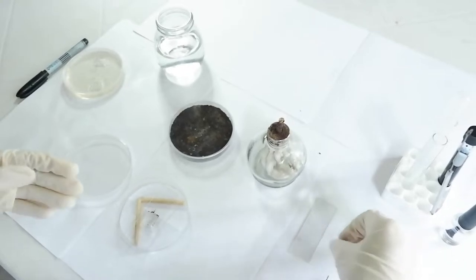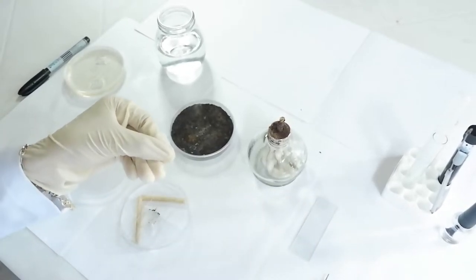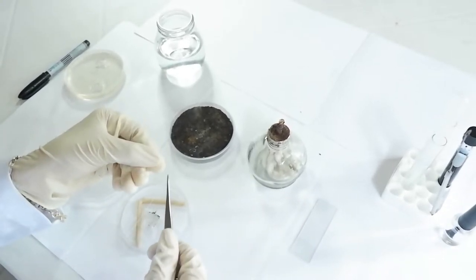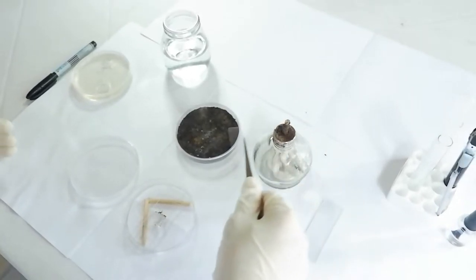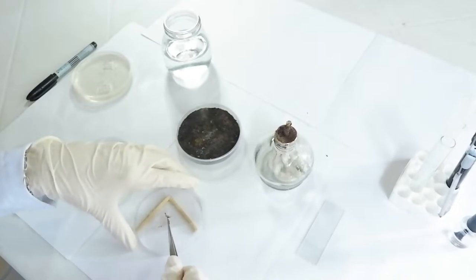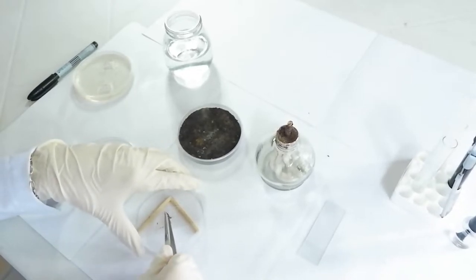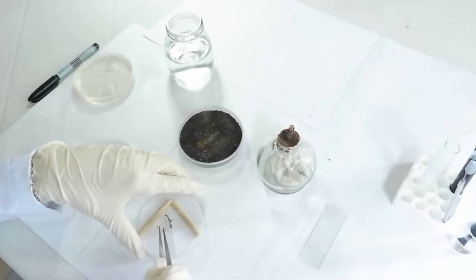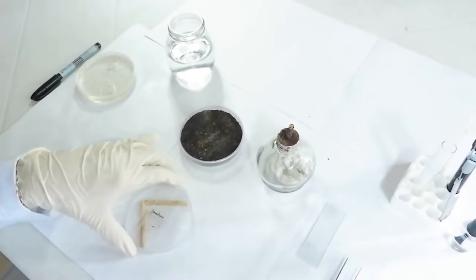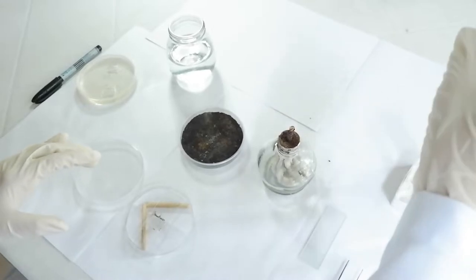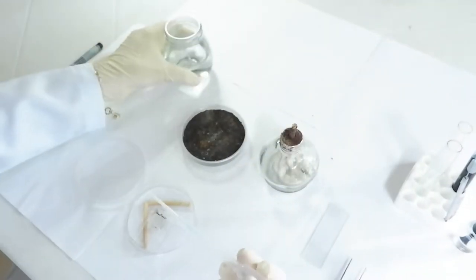Place a sterile cover slip on top of the inoculated agar block. Make sure you have passed this over the flame 3-5 times. Now pour enough sterile water on the filter paper.